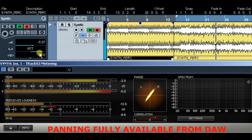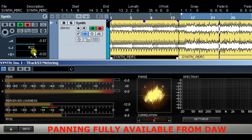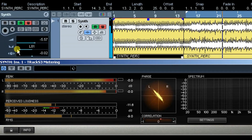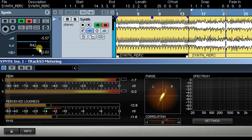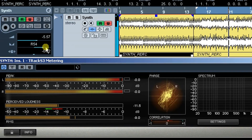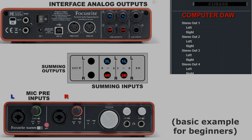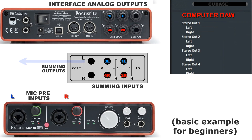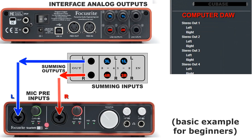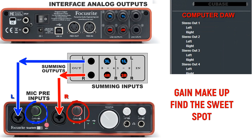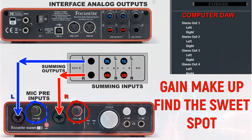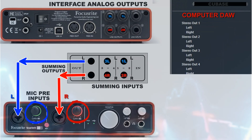Please note: panning stereo from the DAW computer is completely and fully available. Finally, send the master stereo back to the DAW interface for gain makeup, set the proper volumes on your mic preamps, and find the sweet spot for main record.